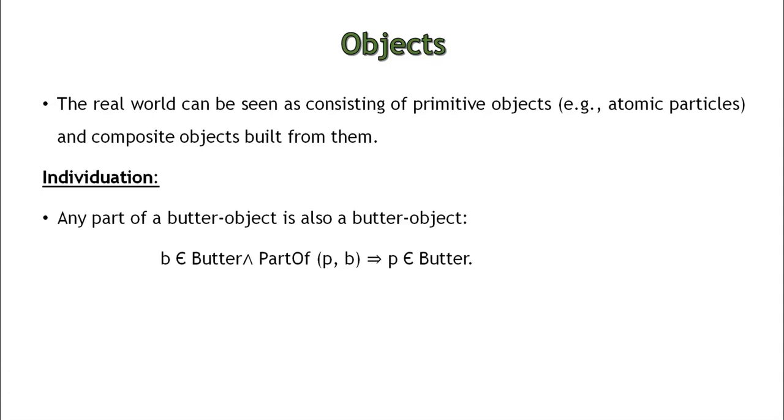By reasoning at the level of large objects such as fruits, cards, etc., we can overcome the complexity involved in dealing with the vast number of primitive objects individually.